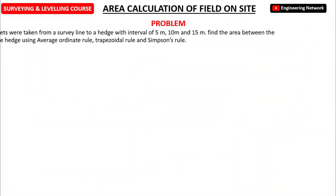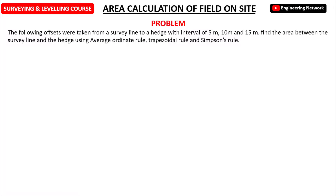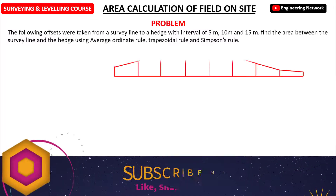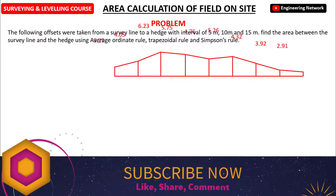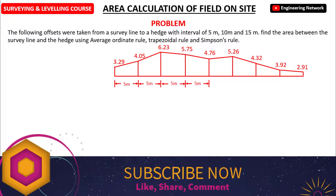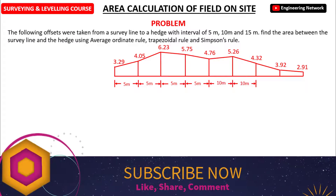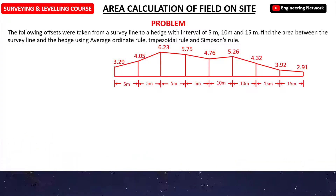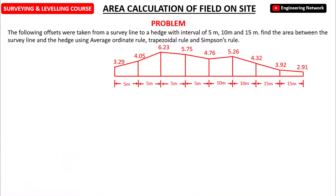The question states that the following offsets were taken from a survey line to a hedge with intervals of 5m, 10m, and 15m. Find the area between the survey line and the hedge using the average ordinate rule, trapezoidal rule, and Simpson's rule.